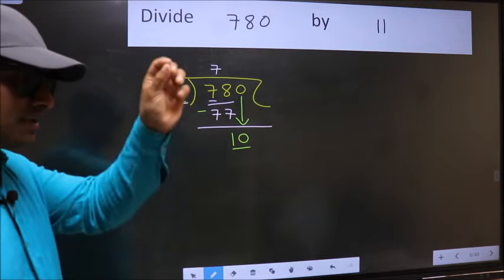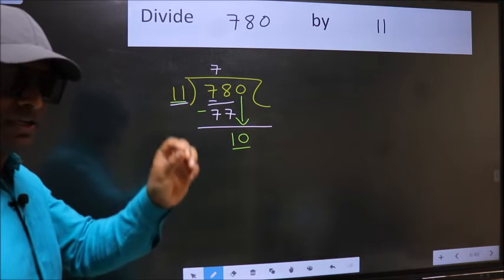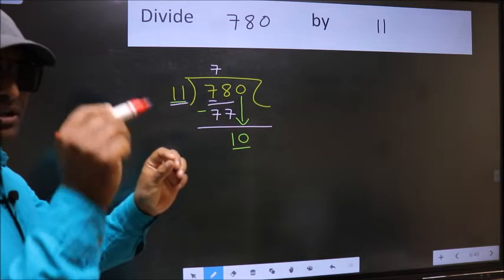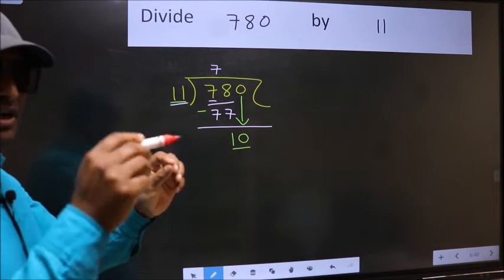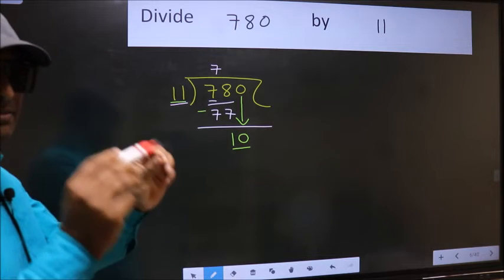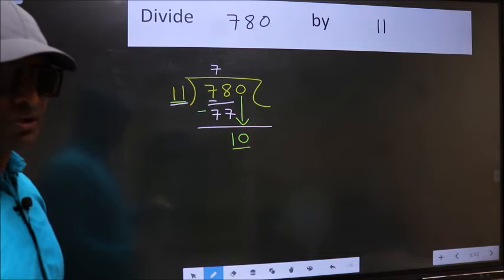I repeat: bringing the number down and also putting a dot and taking 0 - both in the same step - you should not do this.